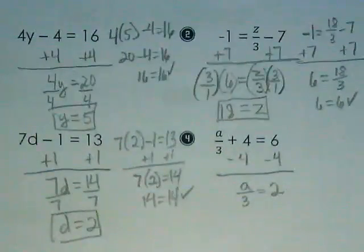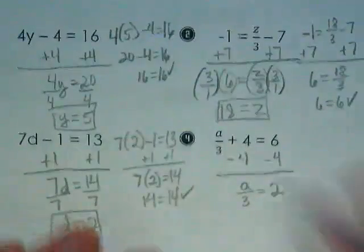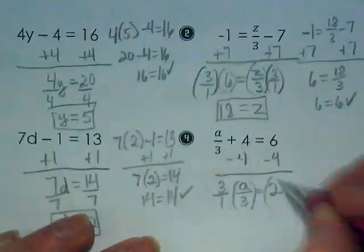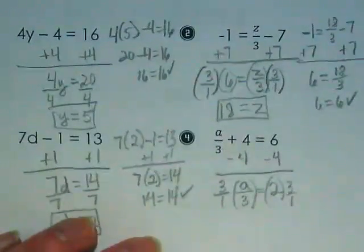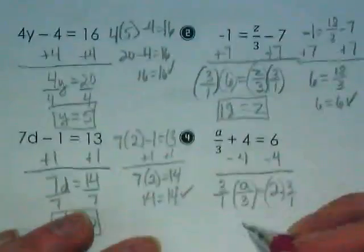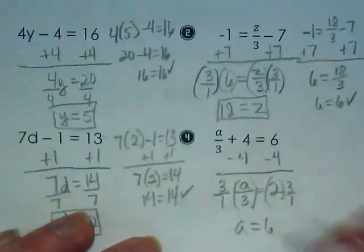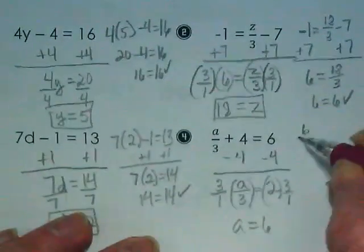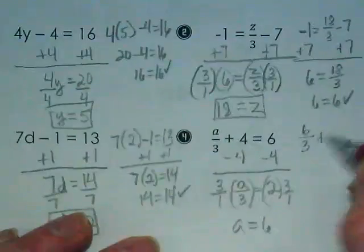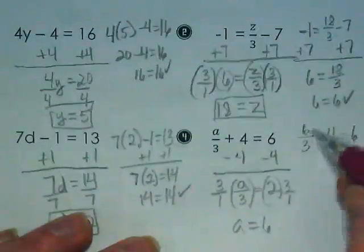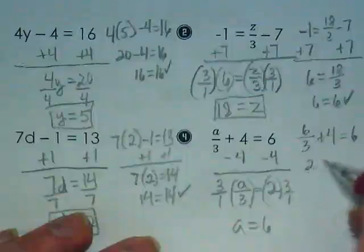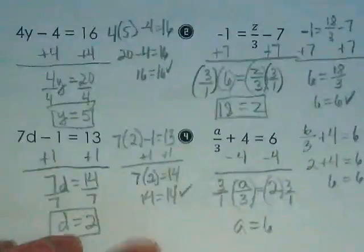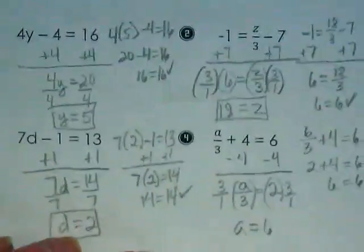What's invisible in front of that a? 1. So the reciprocal here is? 3. 3 over 1. That leaves us with a on the left side and 6 on the right side. We rewrite this by doing 6 divided by 3 plus 4 doesn't equal 6. 6 divided by 3 is 2 plus 4 equals 6. So it checks.